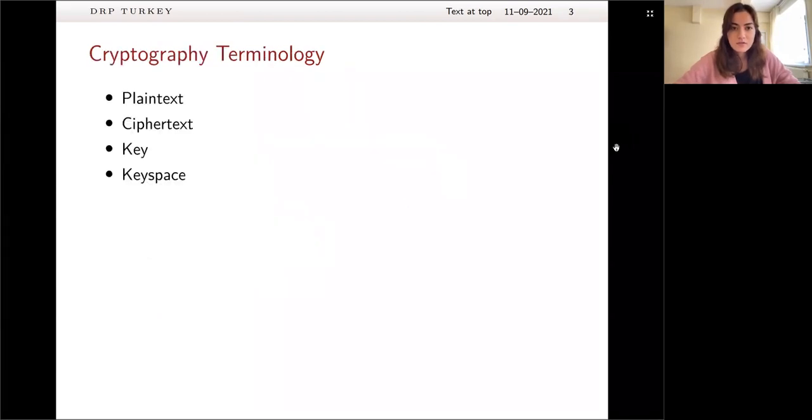So before I continue, I want to give you this terminology. So there are not much of it, we just have four different words here. Plain text is the message we want to be encrypted and delivered. Cipher text is the text has been encrypted and we wish to be decrypted by our receiver. Key is the string we use for transforming plain text to cipher text and vice versa. And keyspace is the set of all possible keys.